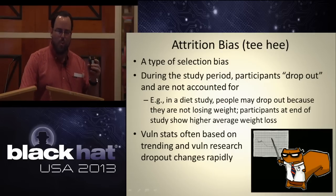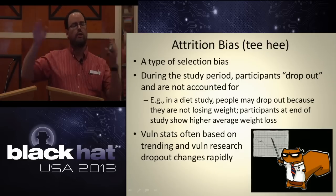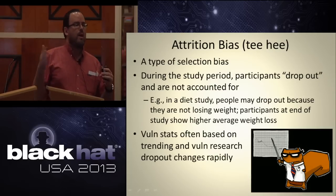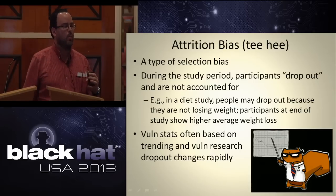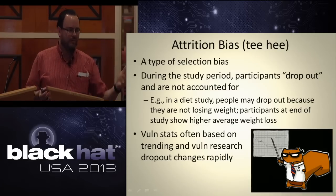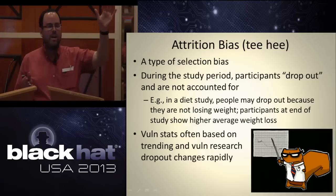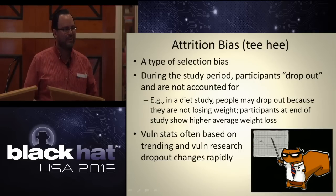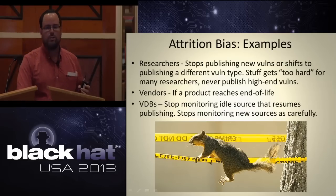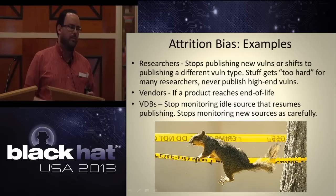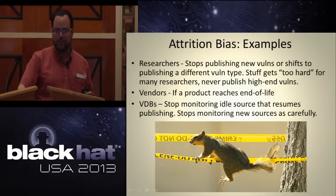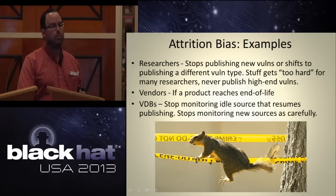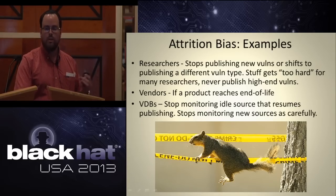One kind of selection bias we like is attrition bias — where in a longitudinal or time-based study, the subjects you're studying drop out over time, screwing up your statistics. Think about a weight loss study where halfway through, the people who aren't losing weight drop out, and at the end everyone lost all this weight. For researchers, they come in, do a bunch of disclosures, drop in and out all the time. For vendors, if a product reaches end of life, they're not investigating it anymore — there may be new vulnerabilities affecting the old product, but we won't necessarily know.